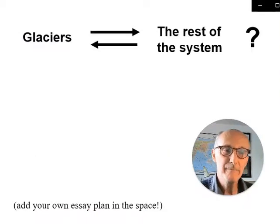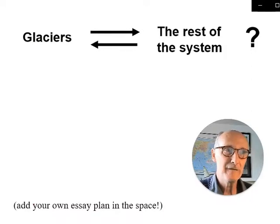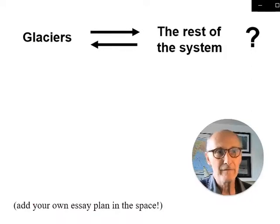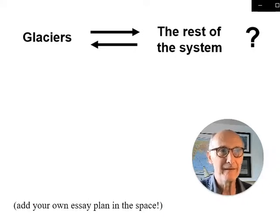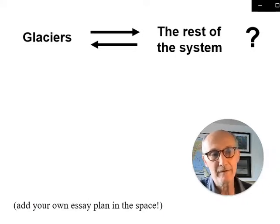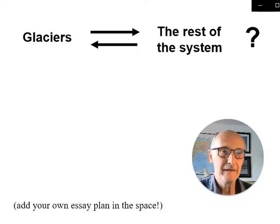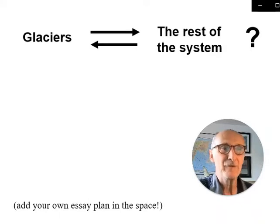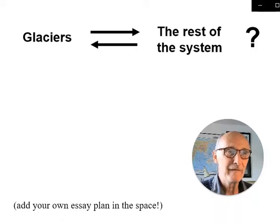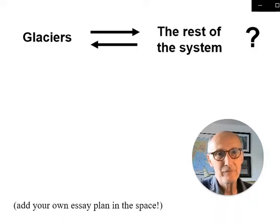That really is the main point I want you to think about today: the connections between glaciers and the rest of the system. The two-way arrow illustrates that glaciers affect other components of the system, and the system itself determines the way that glaciers behave. I'd like you to think about developing your own essay plan in that blank space and fill it in after we've talked through some of the issues in this session.